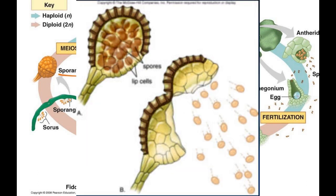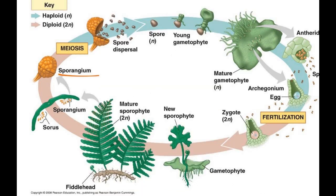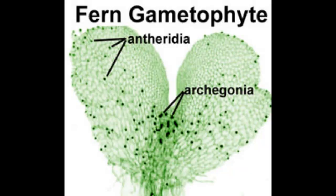The spore is released onto a suitable substrate that grows via mitosis. The spores go through mitosis to create many other identical haploid cells.